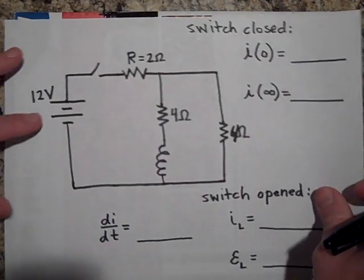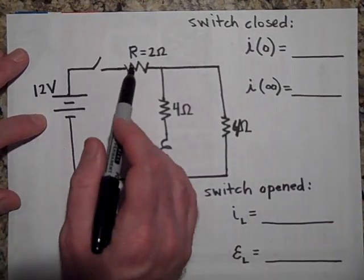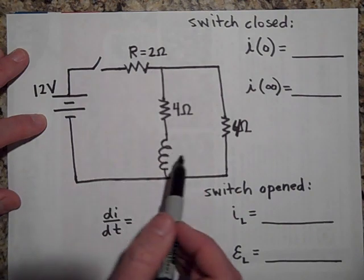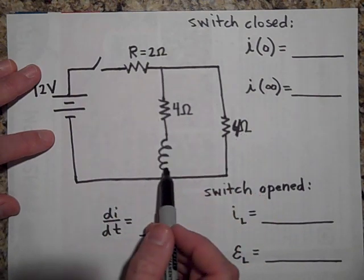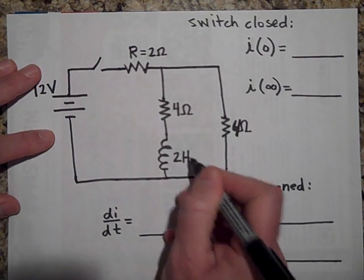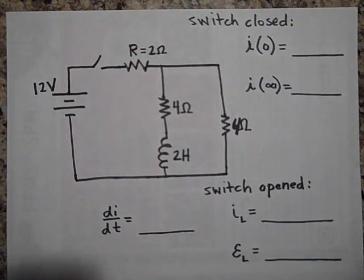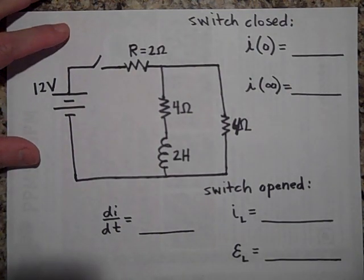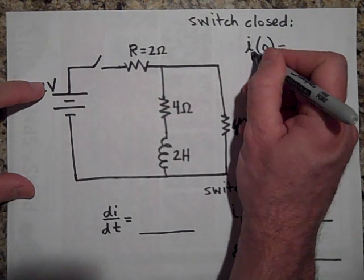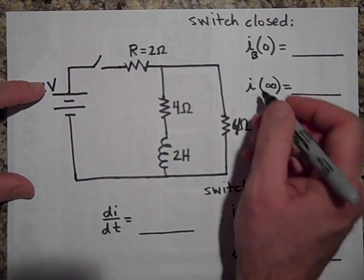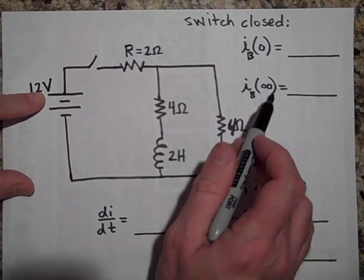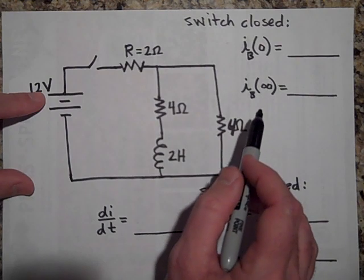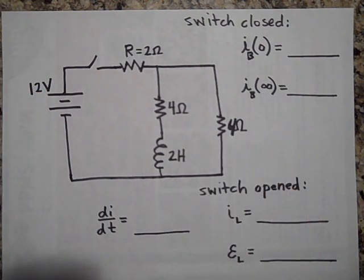Problem two: we have a 12-volt battery, a switch, a 2-ohm resistor, and then two resistors in parallel — one branch is a 4-ohm resistor and the other branch has a 4-ohm resistor in series with a 2-Henry inductor. When the switch is closed, what will the current in the battery be at t equals zero, and what will the current in the battery be a long time later?